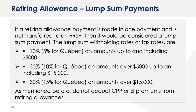If a retiring allowance payment is made in one payment and is not transferred to an RRSP, then it would be considered a lump sum payment. The lump sum withholding rates are: 10% (5% for Quebec) on amounts up to and including $5,000; 20% (10% for Quebec) on amounts over $5,000 up to and including $15,000; and 30% (15% for Quebec) on amounts over $15,000. As mentioned before, do not deduct CPP or EI premiums from the retiring allowance.